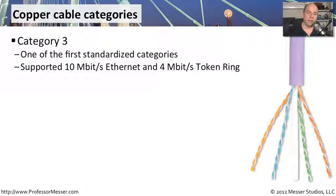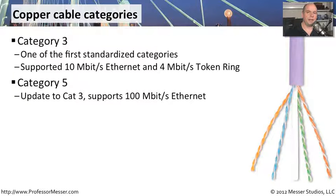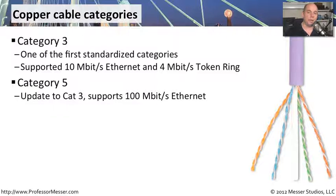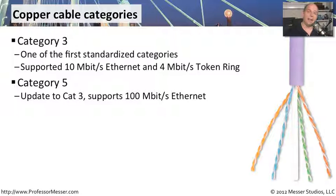We quickly realized we needed faster technologies. As we got faster network adapters and needed 100 megabit ethernet connectivity, we moved to Category 5 — an update to Category 3. Pretty much everybody jumped right over Category 4 and went straight to Category 5, because we were rolling out 100 megabit ethernet to the desktop everywhere. All the wiring in our walls, ceilings, and floors needed to be Category 5.